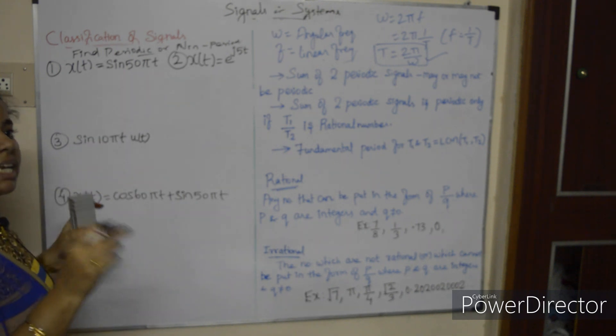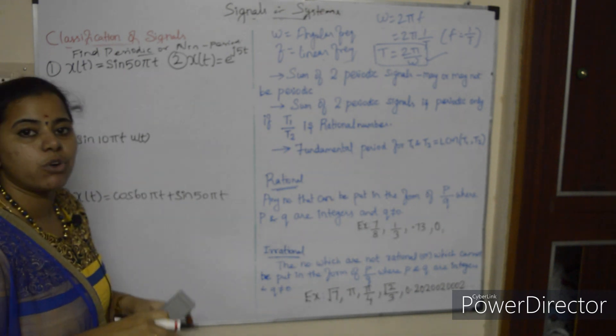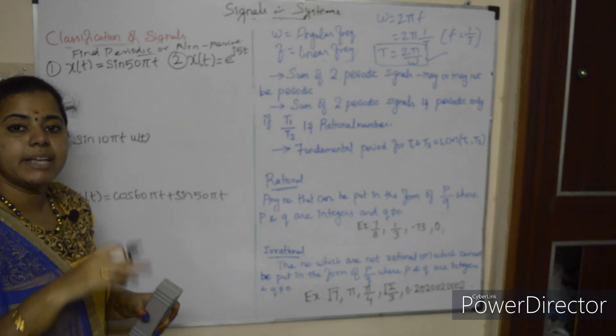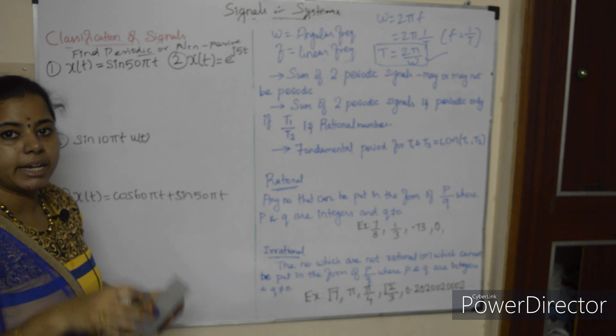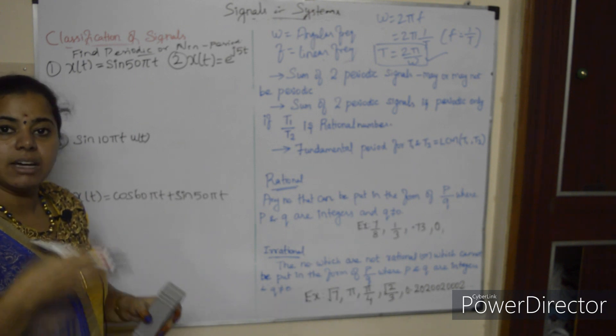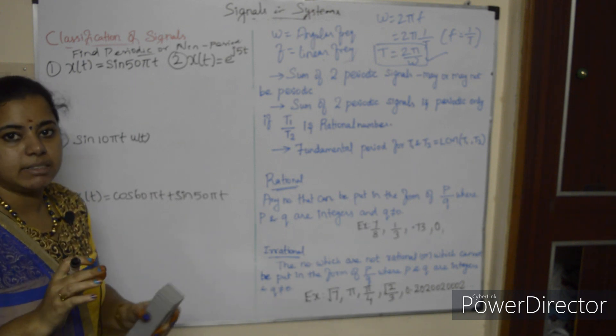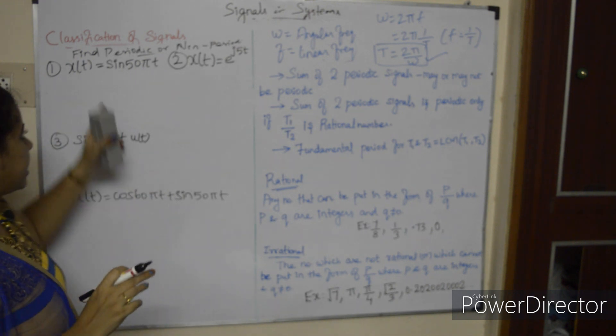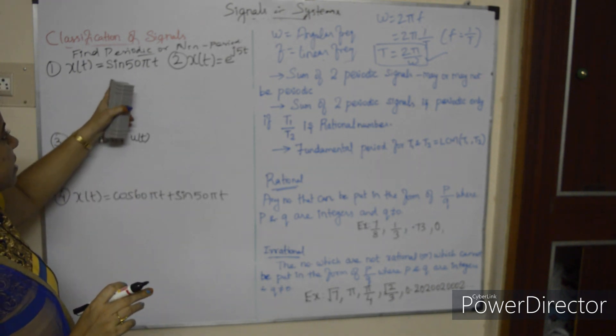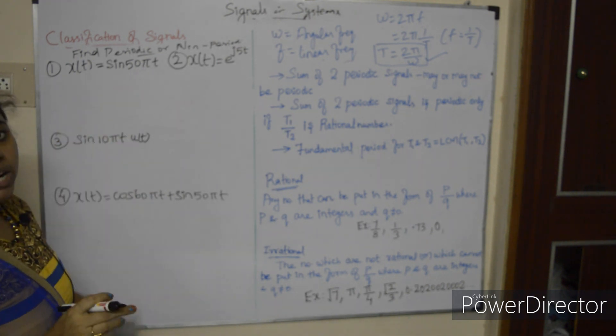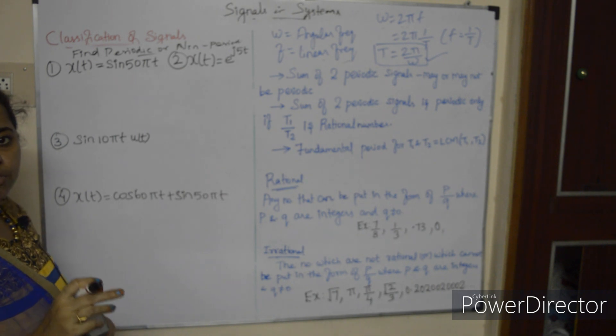Problem 1: x(t) = sin(50πt). Since it is in the form A·sin(ωt), this is a periodic signal. We need to find the fundamental time period.